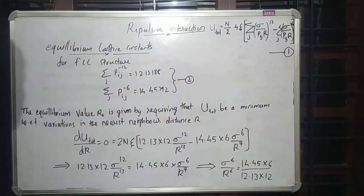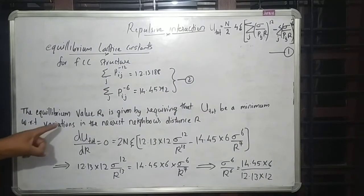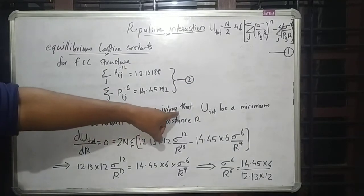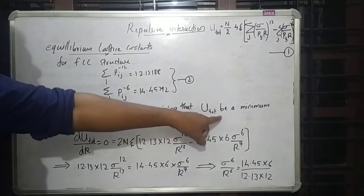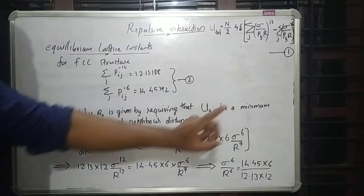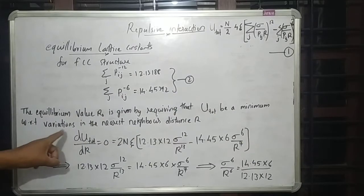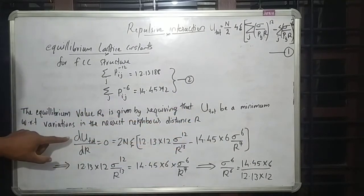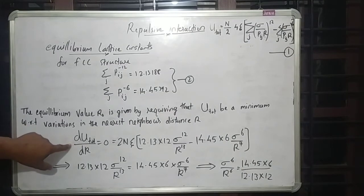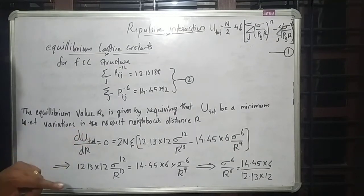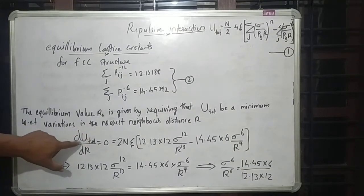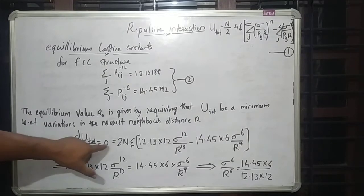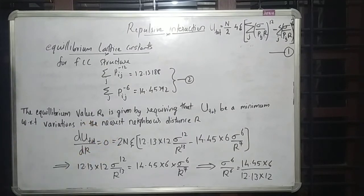The equilibrium value R₀ is found by requiring that U_total be a minimum with respect to the nearest neighbor distance R. So we set dU_total over dR equal to zero. The potential energy is minimum at R equals R₀.